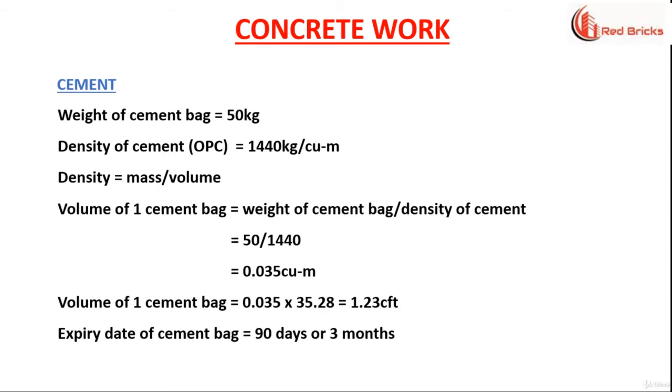Let us start with calculating the cement. Standard weight of cement bag is equal to 50 kg. Density of ordinary Portland cement is 1440 kg per cubic meter. Density is equal to mass by volume.